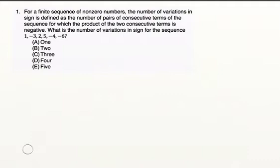So we have to determine what they mean by this term variations in sign. They say it's the number of pairs of consecutive terms of the sequence. So if we're looking at pairs of consecutive terms of the sequence, we can see this.